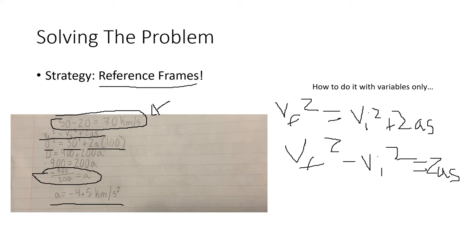And then finally, we get VF squared minus VI squared over 2S equals A. If we plug in all these variables, we can also find A that way.